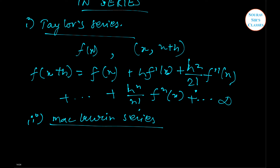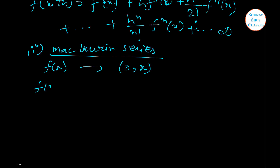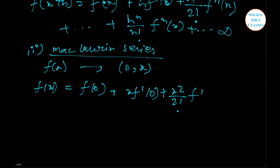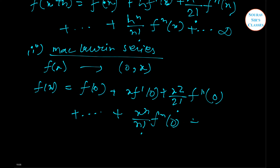Next we are going to deal with the Maclaurin's series. This states that if f(x) possesses continuous derivatives of every order in the open interval of 0 and x, then the series expansion will be as follows — please note it down as this is also going to be a large infinite series, just like the Taylor series. With this we come to an end of this introduction.